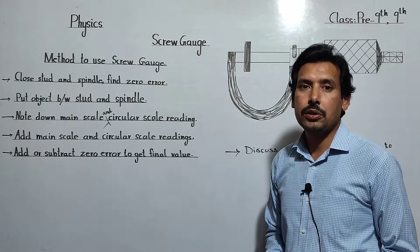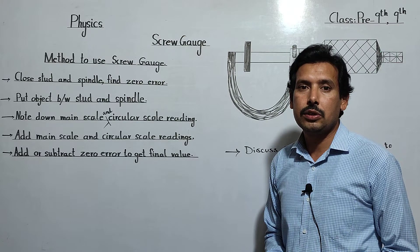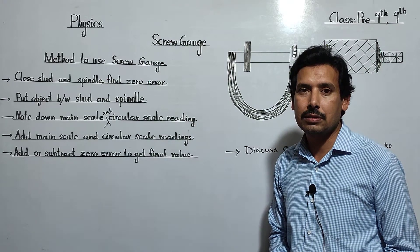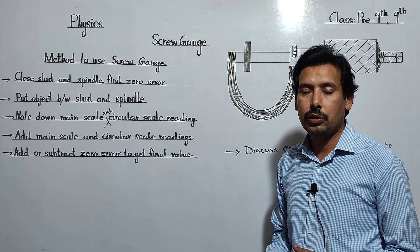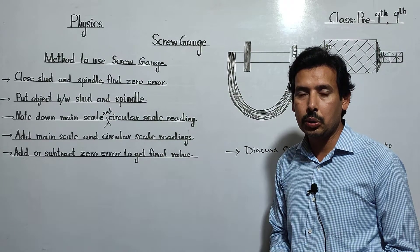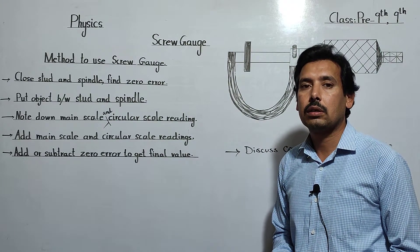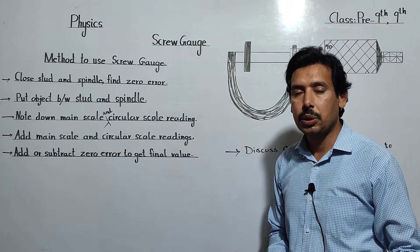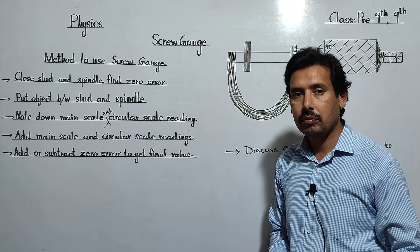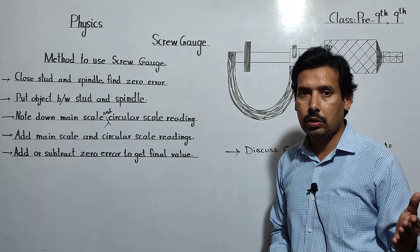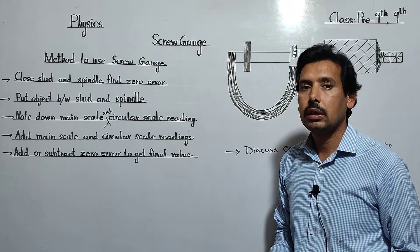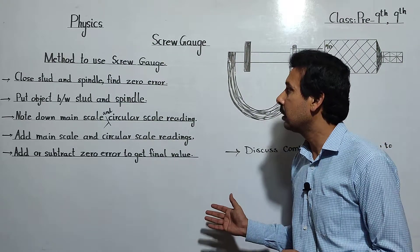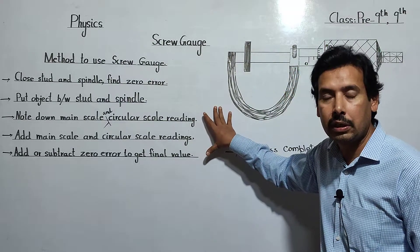Bismillahirrahmanirrahim. Dear students, as you know I have been teaching physics to 9th and pre-9th class. We are discussing about screw gauge. In the previous lecture I discussed about zero error — how to find the zero error and how to correct the zero error. Now I will continue this same topic, and this is the last part.